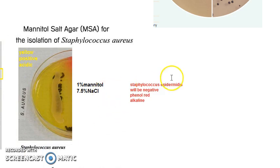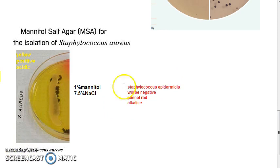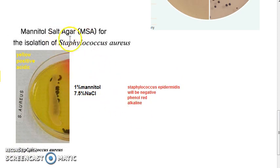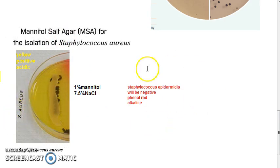Staphylococcus epidermidis will cause red colour pigmentation on Mannitol Salt Agar — it will be negative. So we can use Mannitol Salt Agar to differentiate between Staphylococcus aureus and Staphylococcus epidermidis.